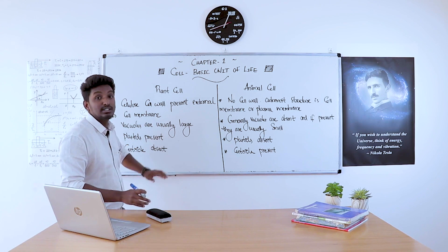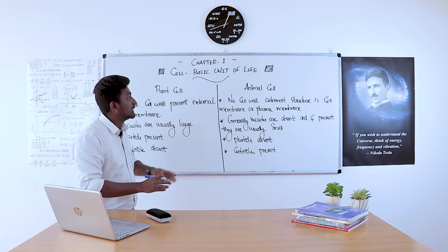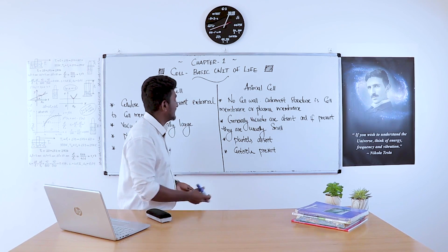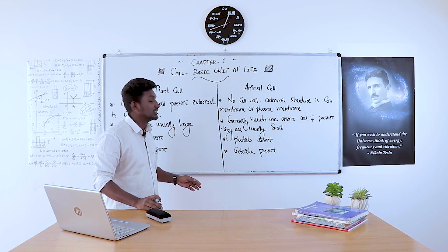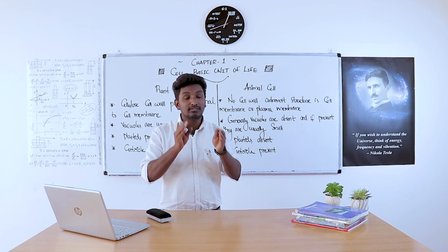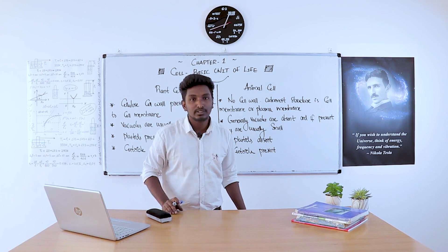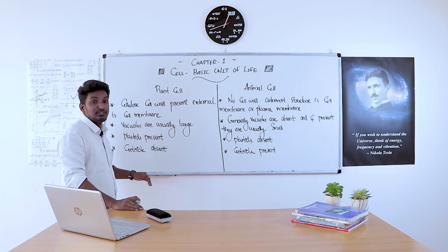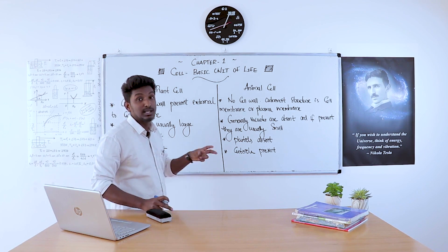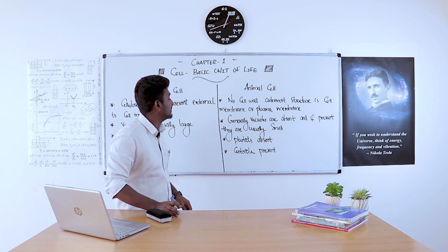In a plant cell, vacuoles are usually large. But in the case of an animal cell, vacuoles are generally absent, and if they are present, they are usually small. Additionally, plastids are present in plant cells but absent in animal cells.